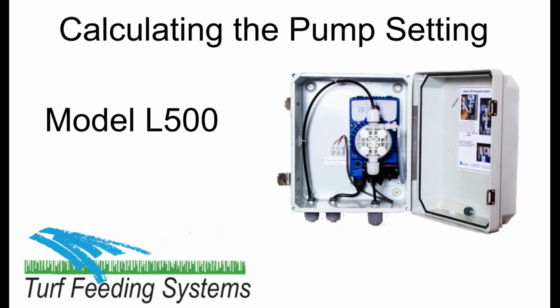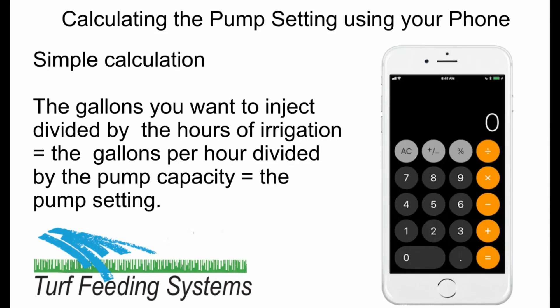This video will walk you through the steps to calculate the pump setting for the L500 Fertigation System. It is a simple calculation: the gallons you want to inject, divided by the hours of irrigation, equals the gallons per hour. Divided by the pump capacity, equals the pump setting.